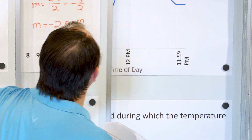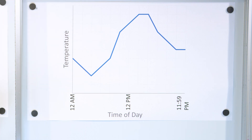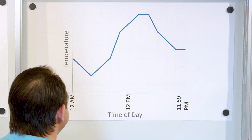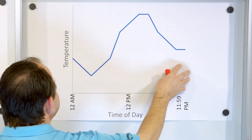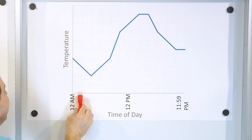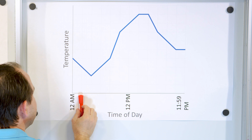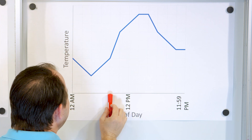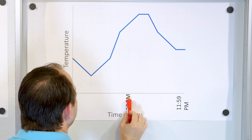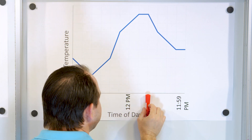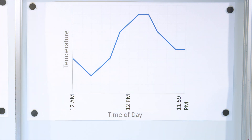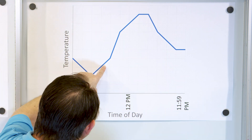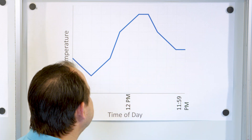Let's take a look at problem number three. Here we have a graph representing the temperature at various times of the day. This is 12 a.m., 12 noon, and 11:59 p.m. Every tick mark on the x-axis represents a two-hour interval: 2 a.m., 4 a.m., 6 a.m., 8 a.m., 10 a.m., 12 p.m. noon, then 2 p.m., 4 p.m., 6 p.m., 8 p.m., 10 p.m., and then midnight. The temperature is going down initially, then going up in the afternoon, and then coming back down in the evening.